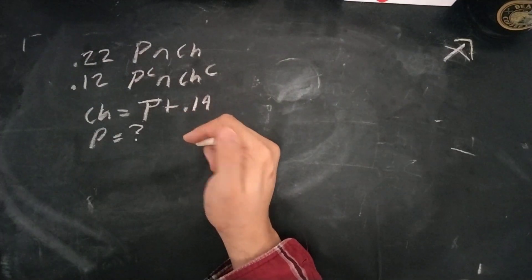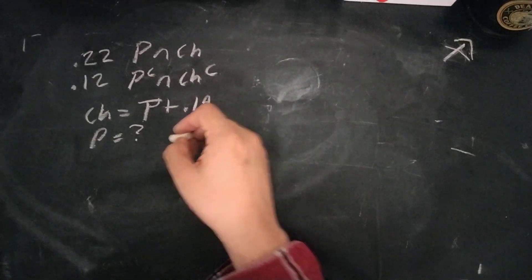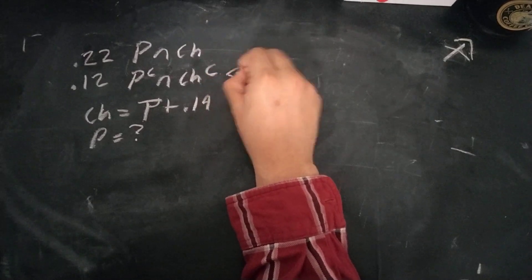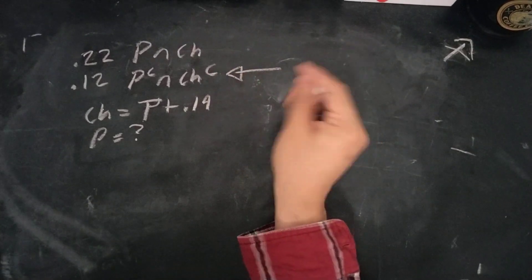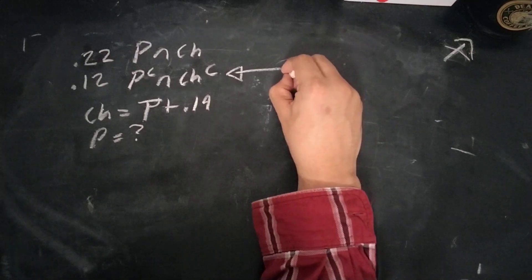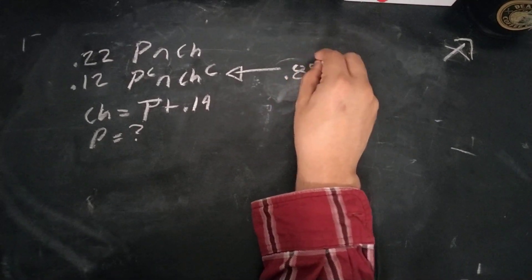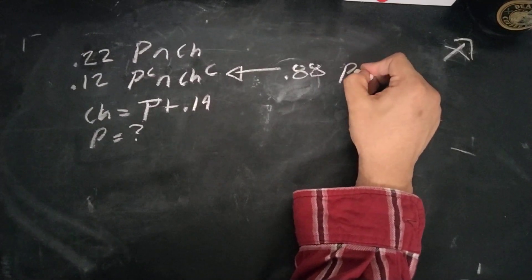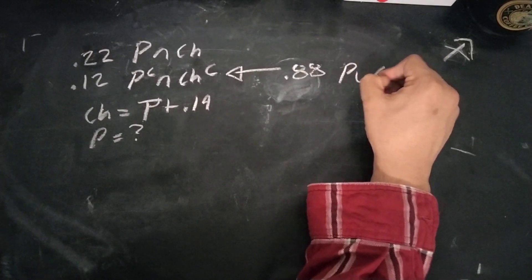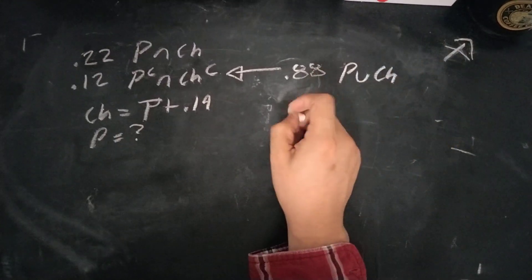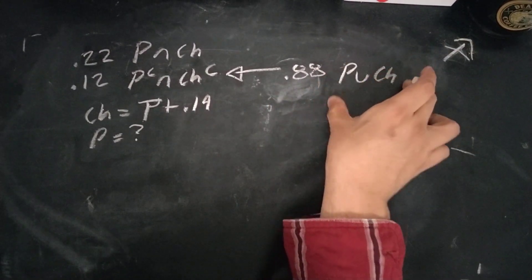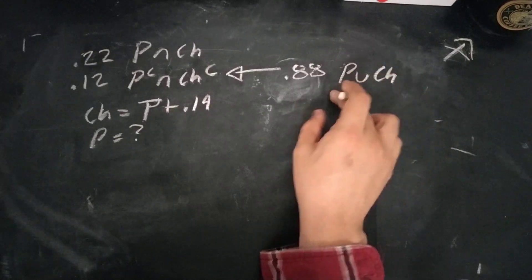So, for starters, what we could do is we find the inverse of this value, which is just 0.88, and that's the probability of P union CH. So that's the probability, this is the number of people that go to either or.